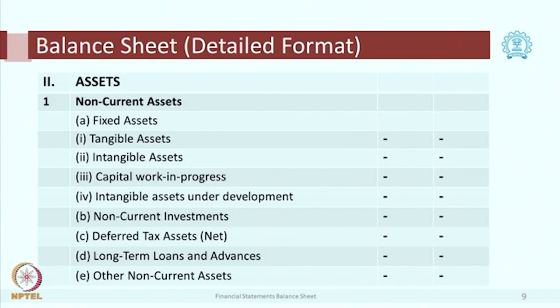Now let us go to the second part of the balance sheet — assets. These are the properties or resources available with the enterprise. Under part 2, item number 1 is non-current assets — non-current means for more than one year, also called long-term. Under that, 1A refers to fixed assets. Fixed assets refer to the infrastructure of the enterprise — assets used for running the business cycle. They do not themselves take part in the business cycle or get converted, but they support it.